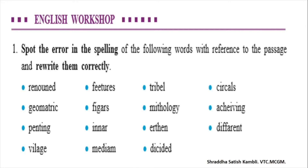Now let us move on and talk about the English Workshop part, where there are some exercises based on vocabulary, some exercises based on comprehension, and a few exercises based on English grammar. We start with the very first exercise, which is based on vocabulary — we are supposed to spot the error in the spelling of these words from the passage.